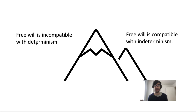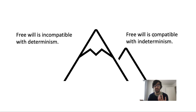That's climbing up incompatibilist mountain. But once you've done that, you have to come down again by showing that free will is actually compatible with indeterminism. Both tasks are very difficult, but presumably the even more difficult task is to show that free will is actually compatible with indeterminism, because there are several well-known problems.